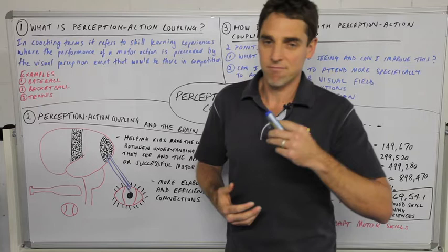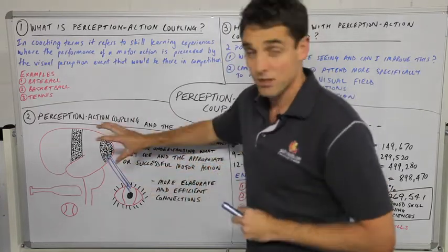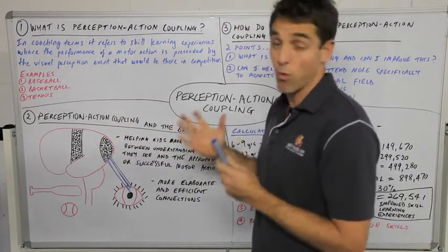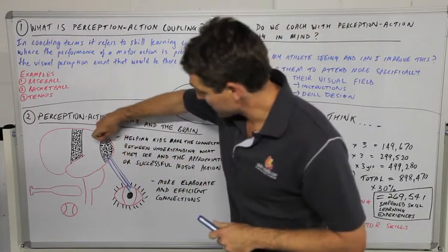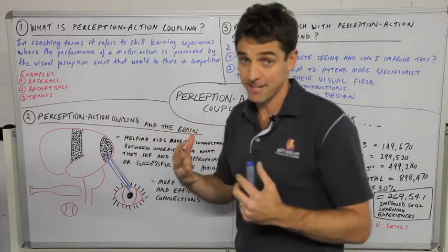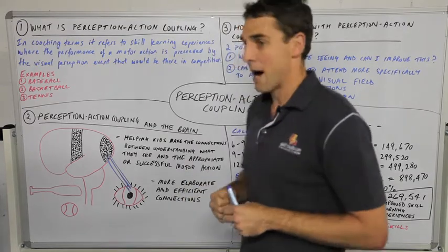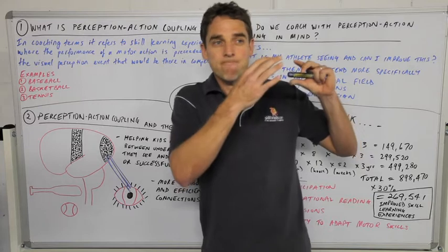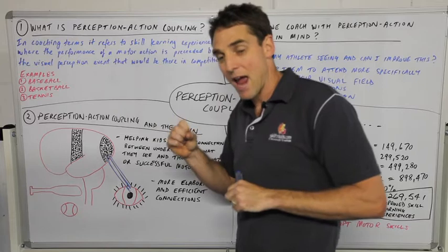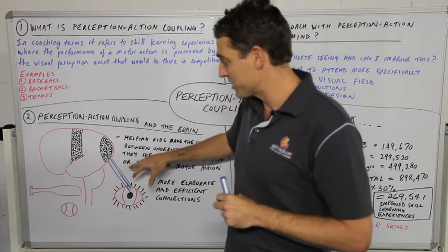But this simplified model really helps us understand how perception action coupling works and why it's beneficial. This part of the brain receives the visual information and works with other parts of the brain to effectively understand it — communicating with the memory part of the brain in particular. It's taking all the information it has seen before in relation to someone pitching, and using that memory to assess what it's seeing now compared to what it's seen in the past.